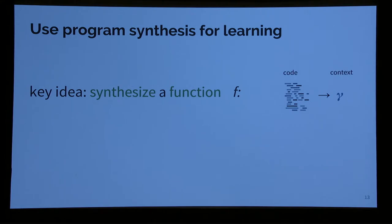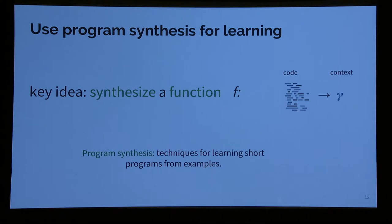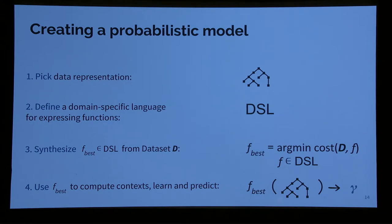For this, we suggest using program synthesis. The whole idea is that we synthesize a short program, and this short program will be the model. It will synthesize a function F that takes code and, based on the code, selects which positions in the code actually matter for the prediction. This is almost the most classic variant of program synthesis: learn short programs from a large number of examples. The programs are short, so we can use classic techniques from program synthesis without needing differentiable magic. We have a representation, a domain-specific language, we synthesize the best program in that DSL, and use it to compute context.